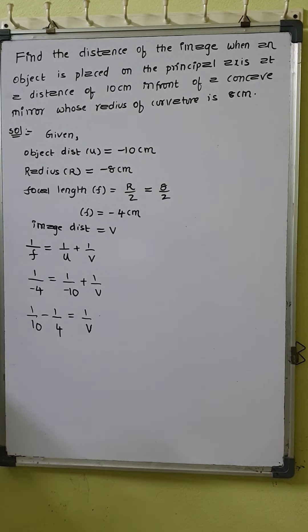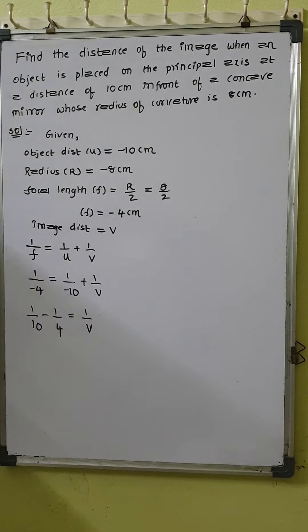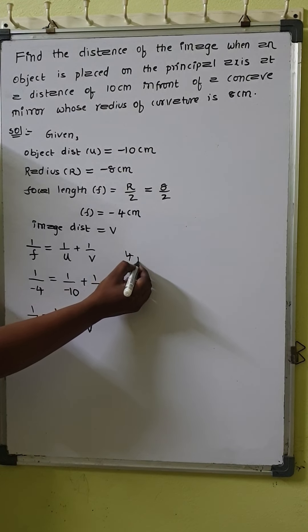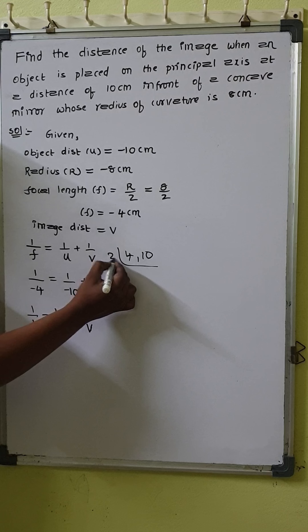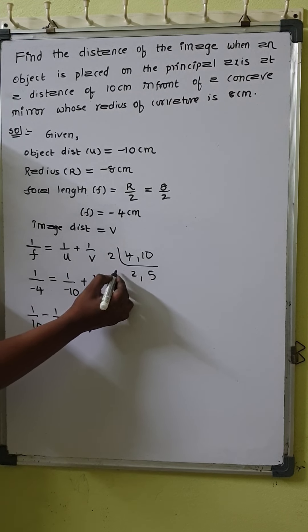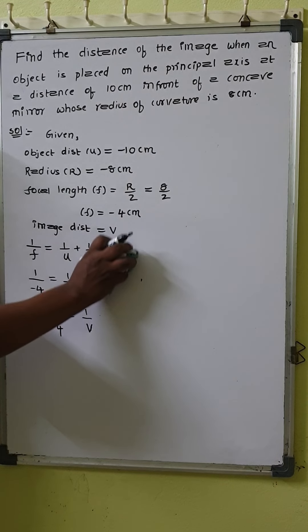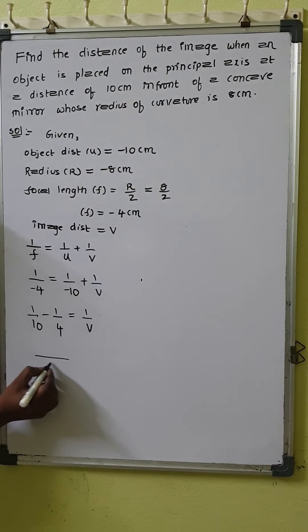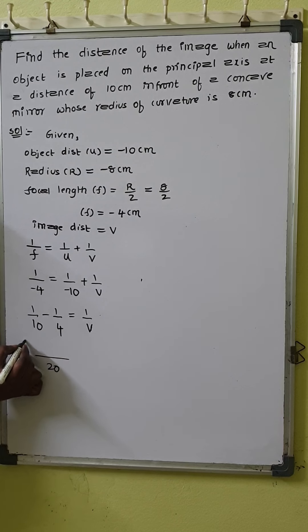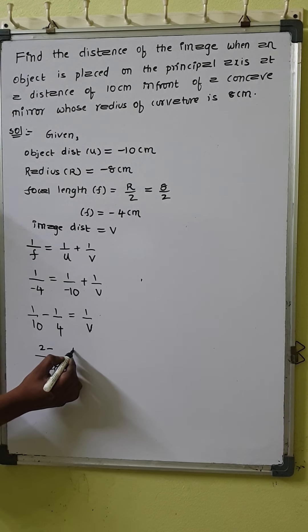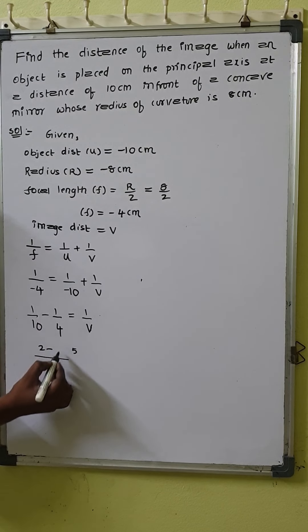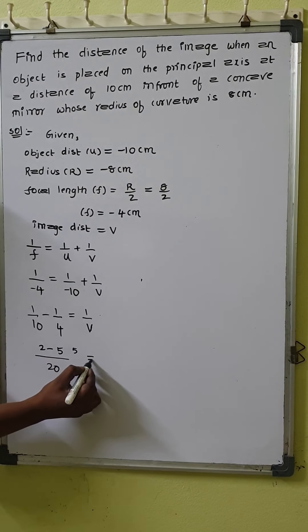Now we find the LCM of 10 and 4. The LCM is 20. So: 2/20 − 5/20 = 1/v, which gives −3/20 = 1/v.